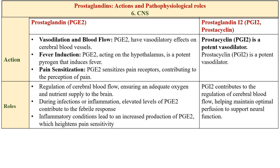Prostaglandin E2 and I2 play important roles in the CNS. Their main role is in fever induction and pain sensitization, and they also have vasodilatory effects. During an immune response, inflammatory signals stimulate the production of prostaglandin E2, which then acts on the hypothalamus — the part of the brain responsible for regulating body temperature — inducing a change in the set point for body temperature and leading to fever. The body responds by raising its temperature to create an environment less favorable for invading pathogens.